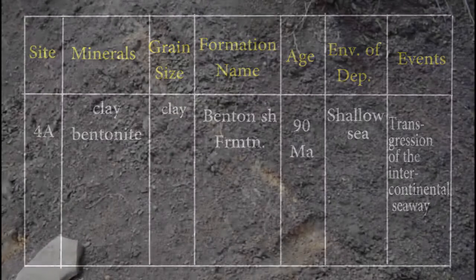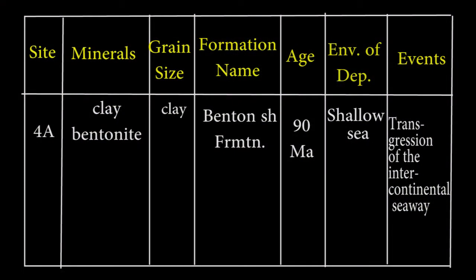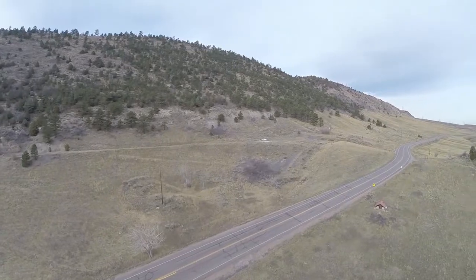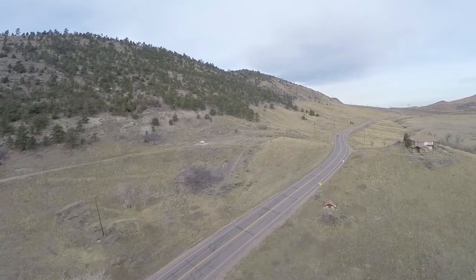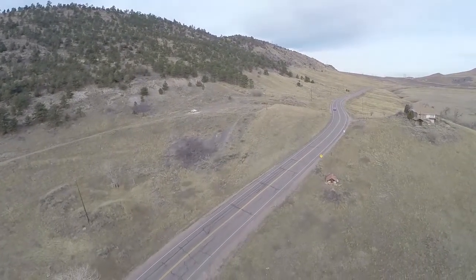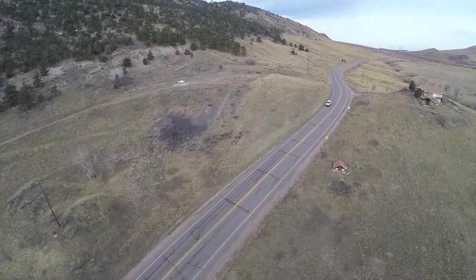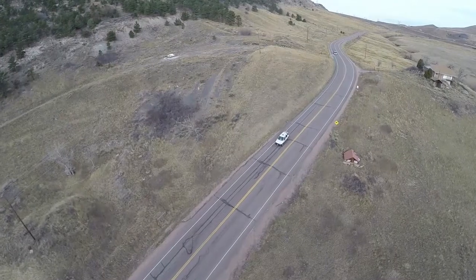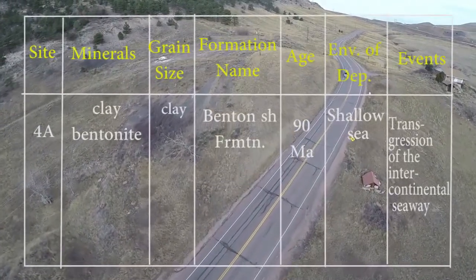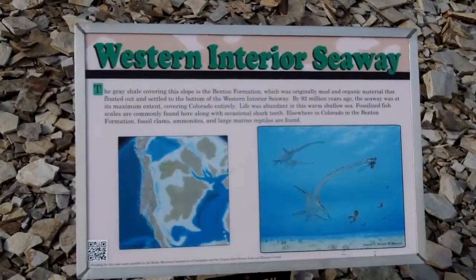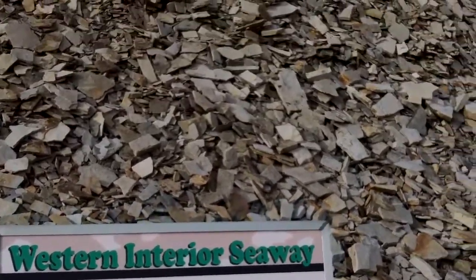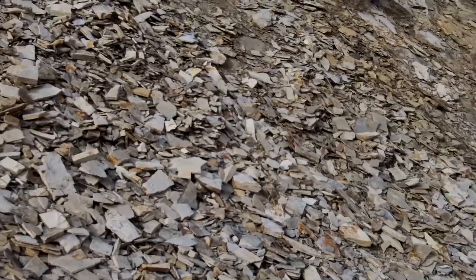Frequent ash layers come from volcanoes to the west in Utah, and result in an altered ash clay called bentonite, which was named after this formation where it outcrops in Rock River, Wyoming. This swelling clay is notorious for destroying infrastructure and foundations through its expansion when wet and contraction when dry. Our minerals are clays, and we should note this is organic rich, and the grain size is just clay. Benton Shale ash beds put this at about 90 million years old, and the environment is the western side of the Western Interior Seaway at a depth of about 200 feet below the surface. The event is a transgression of the sea in the Cretaceous Hothouse.